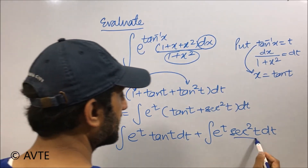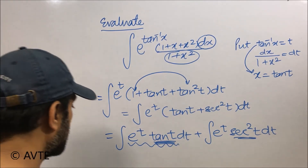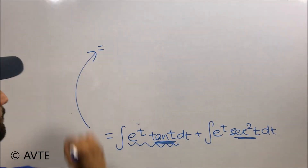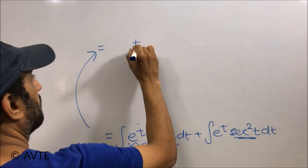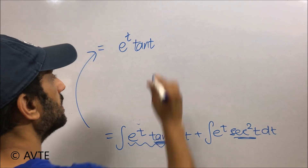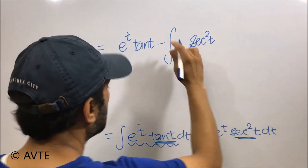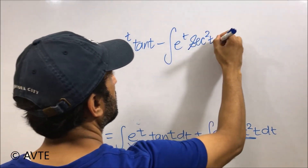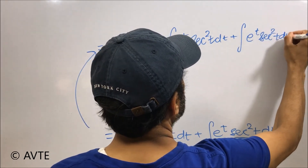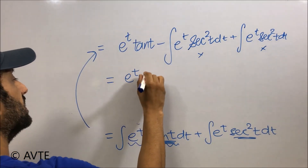Since secant squared t is the derivative of tan t, we expand using integration by parts: the first function tan t as it is, times the integration of e^t which is e^t, minus the whole integration of the derivative of tan t — which is secant squared t — times the integration of e^t, which is e^t dt. You can see that we now have additive inverses, so the two terms cancel and we are left with e^t tan t.